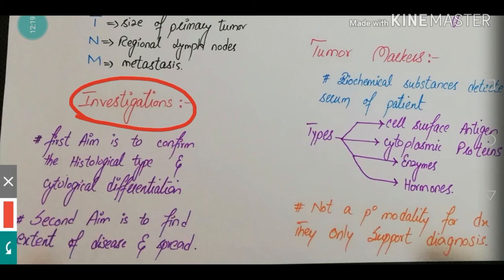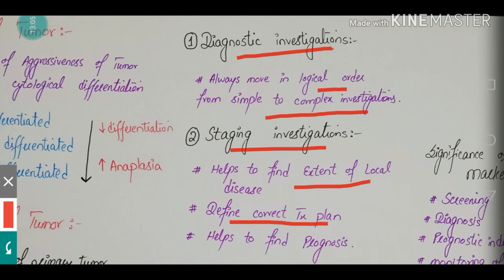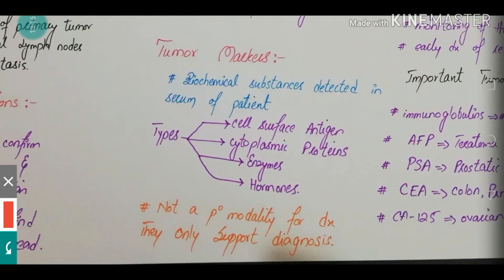There are two primary aims of all investigations done for any carcinoma: first, to confirm the histological type and biological differentiation of that specific carcinoma; and second, to find the extent of the disease and spread so that a proper management plan can be made. For diagnostic investigations, always move in logical order from simple to complex. Staging investigations help find the extent of local disease, define the correct treatment plan, and help determine the prognosis.